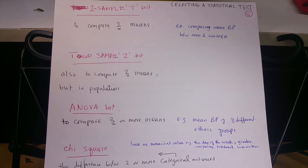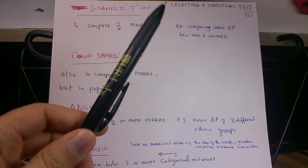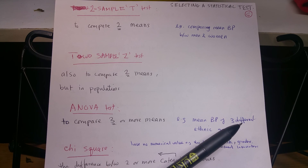There is another test called the ANOVA test, which is the analysis of variance test. It compares three or more means, like comparing the blood pressure between three different groups.